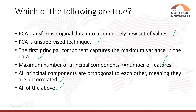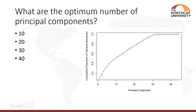The next question asks for the optimum number of principal components. A figure is given showing the number of principal components versus the cumulative proportion of variance explained. Looking at the graph, we can see that at around 30 principal components, almost 100% of the variance is being explained. So we should select at least 30 principal components, and the right answer is 30.